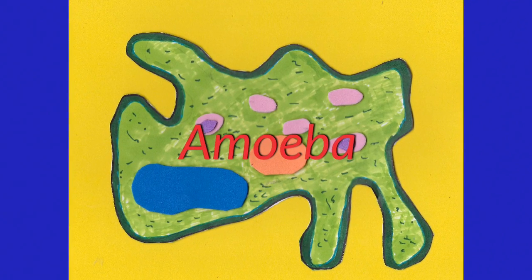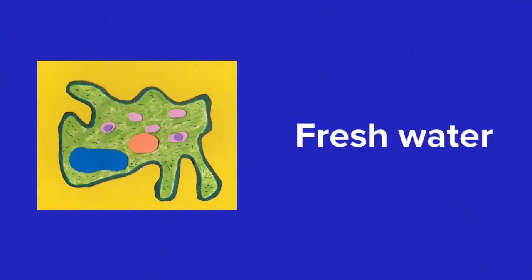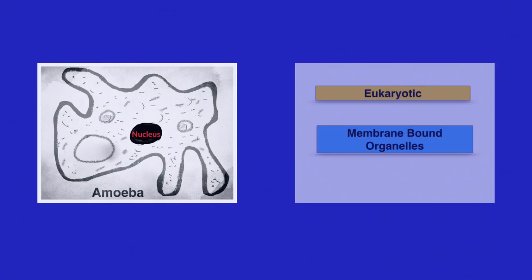One protist that you have to know in great detail is the amoeba. Most amoeba live in freshwater environments; however, do note that there are certain varieties that do live in saltwater. Amoeba are unicellular organisms. They are eukaryotic, so they have a membrane-bound nucleus and membrane-bound organelles.